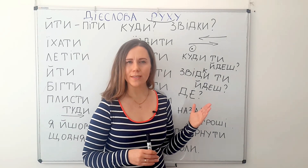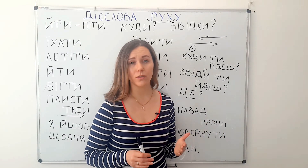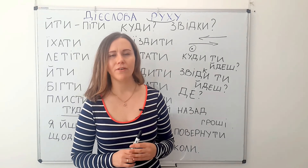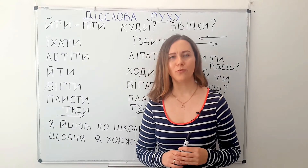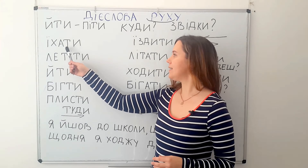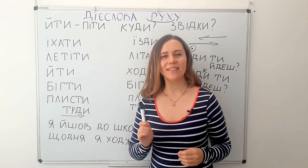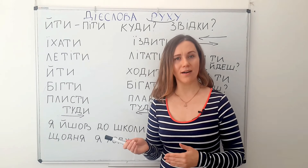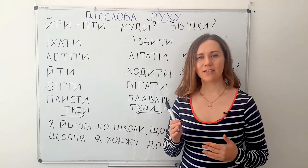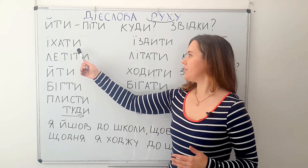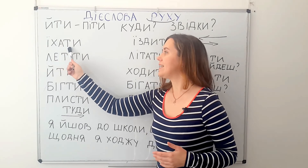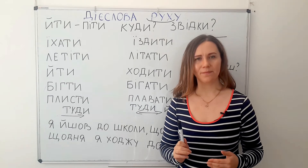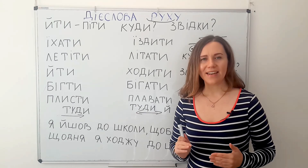Hope that's clear. If not, ask your questions. Now let's learn several verbs of movement. ЇХАТИ means 'to go,' but here by car, by bus, by trolleybus — so you need a vehicle. ЇХАТИ — to go by vehicle.